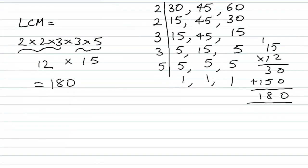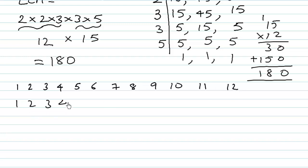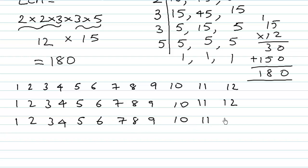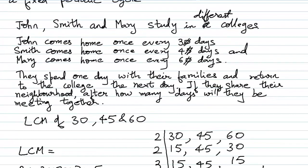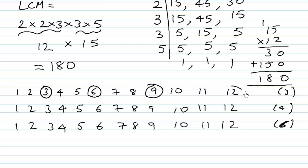In order to understand this, let us write down the days: 1, 2, 3, 4, 5, 6, 7, 8, 9, 10, 11, 12. John will be coming after 3 days, so he will be coming on day 3, then day 6, then day 9, then day 12 and so on.